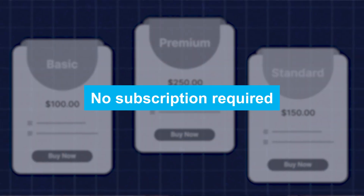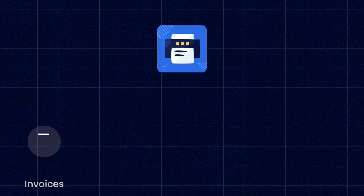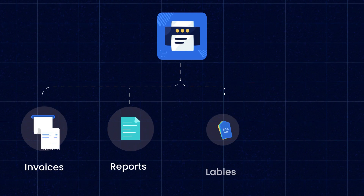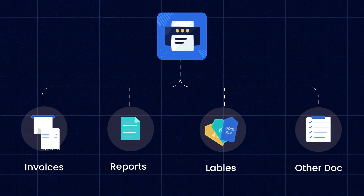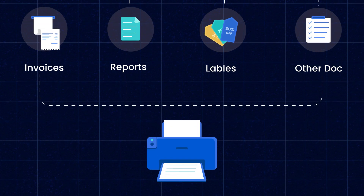Plus, there is no subscription required, so you can enjoy hassle-free printing without any recurring cost. Udo Direct Print allows you to print invoices, reports, labels, and other documents directly to your network printers, without downloading them to your local devices. This feature is a time-saver for businesses that handle a high volume of print jobs daily.